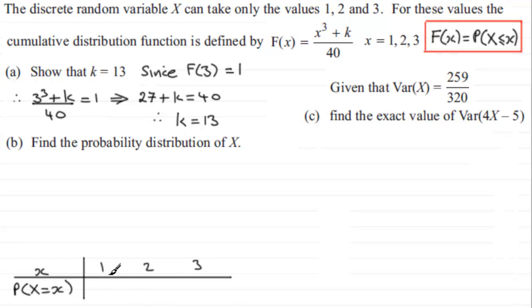Now to get the probability that X equals 1, well that's going to in fact be F(1). F(1) would be the probability that X is less than or equal to 1. And since it's the lowest value, it's going to be equal to the probability that X equals 1. And therefore, we just need to substitute 1 into the formula here. So you're going to have 1 cubed plus k, k is 13, divided by 40. So 1 cubed is 1 plus 13 is 14, 14 divided by 40. I'm going to leave it as 14 over 40.